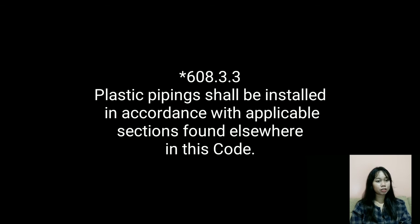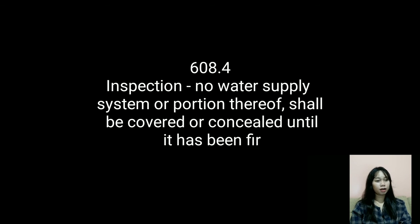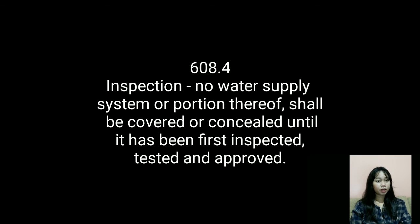Third, plastic piping shall be installed in accordance with the applicable section found elsewhere in this code. Section 608.4 — Inspection: No water supply system or portion thereof shall be covered or concealed until it has been first inspected, tested, and approved.